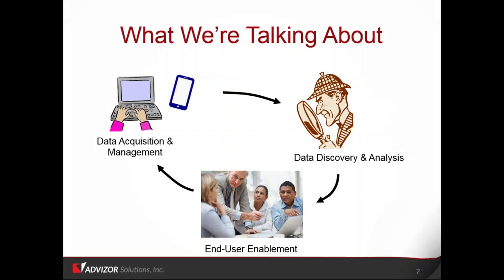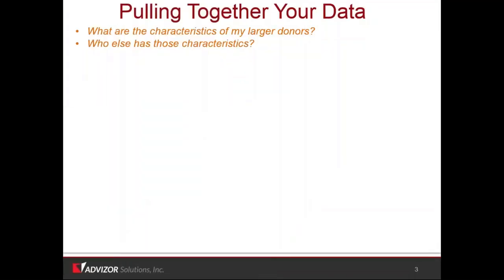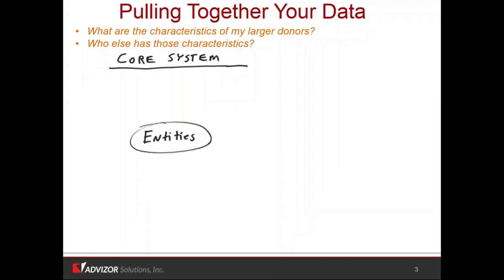At the data level, if you're pulling data together, the question is: what are the characteristics of my larger donors and who else has those characteristics? There's a set of information in the core system — Agilon — where there are entities and a table of facts on entities that usually includes biographical and geographical information, wealth screening scores, and class year affiliation. If you don't have wealth screening scores, there's a ton of data at the zip code level you can bring in to get some aspect of wealth.